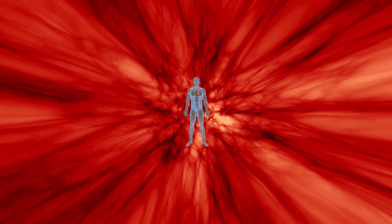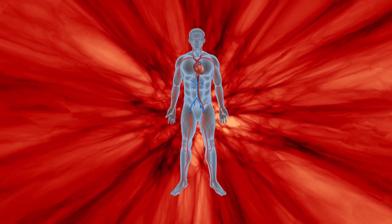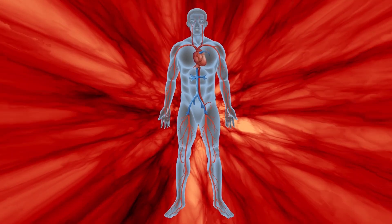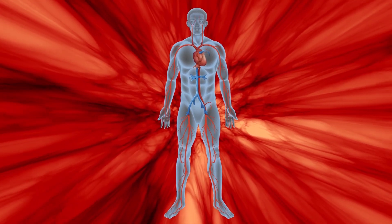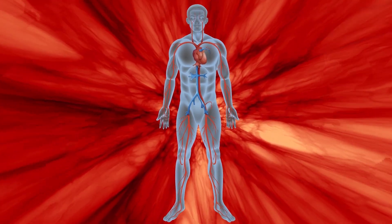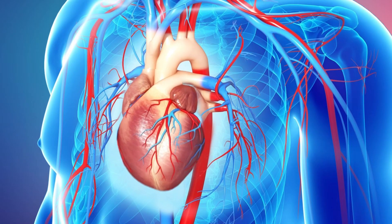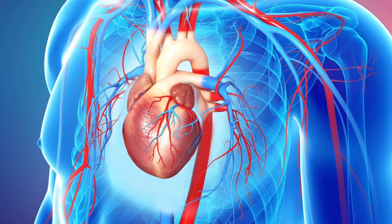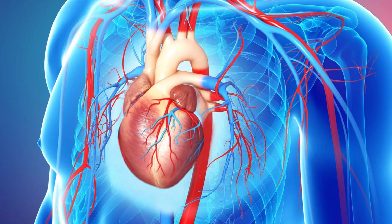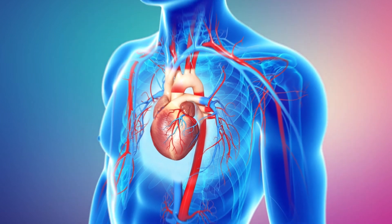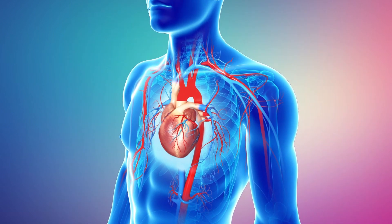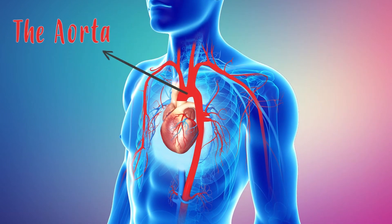We're going to start a journey through the circulatory system so we can understand it much better. The journey of blood begins in the heart. With the pulsations of the heart, the blood comes out through one of the greatest highways of the circulatory system, called the aorta.